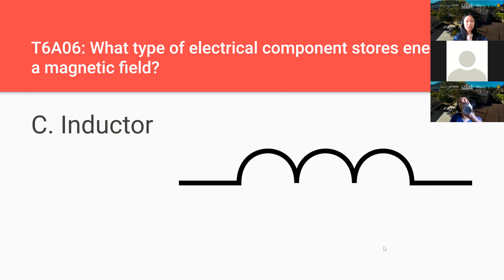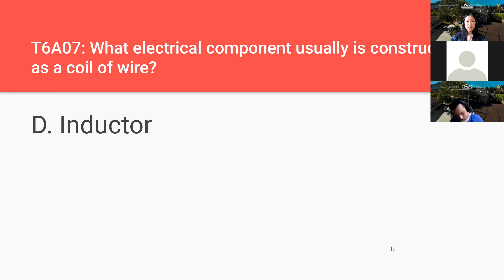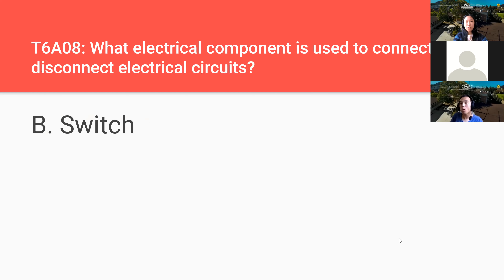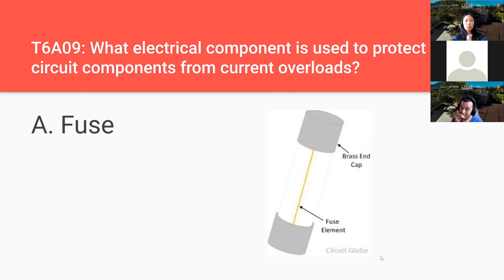What type of electrical component stores energy in a magnetic field? An inductor. What electrical component is usually constructed as a coil of wire? An inductor. What electrical component is used to connect or disconnect electrical circuits? A switch — like a light switch, you can use it to turn on the lights. What electrical component is used to protect other circuit components from current overloads? A fuse.